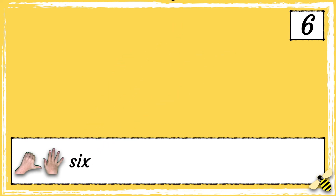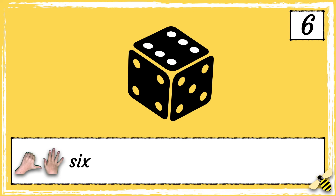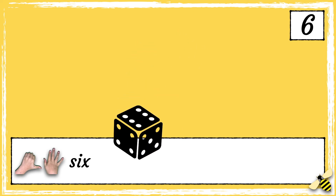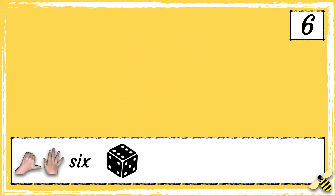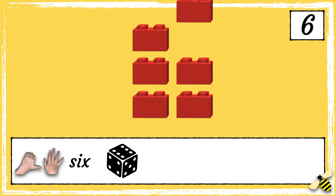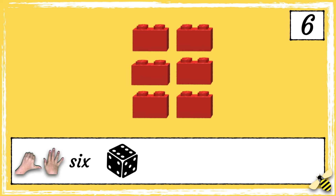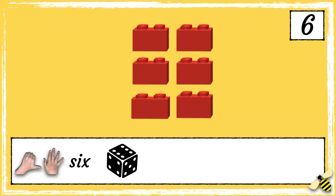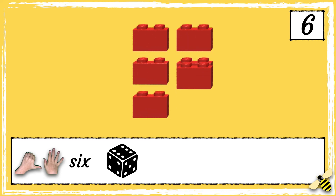Here are 6 spots on the die. Here are 6 Lego blocks. 1, 2, 3, 4, 5, 6.